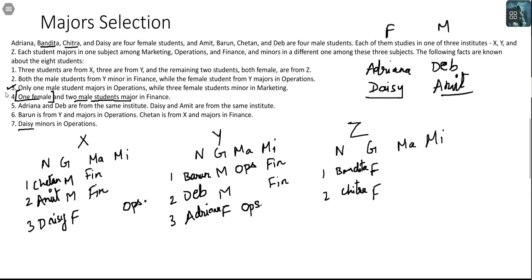Looking at the two statements not yet used: only one male student majors in Operations, and three female students minor in Marketing. Of the three females minoring in Marketing, Daisy is not one of them — so it will necessarily be Adriana, Bandita, and Chitra who minor in Marketing. Chetan majors in Finance and Amit majors in Finance. Barun majors in Operations — so Deb cannot major in Operations. He also cannot minor in Finance because he is already minoring in Finance — wait, he cannot major in Finance either — so Deb must major in Marketing.